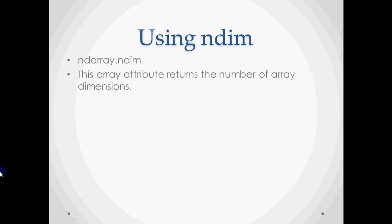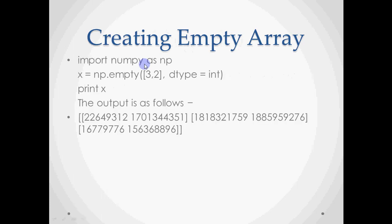Ndim is another attribute that tells you the number of dimensions of an array. Now there are some basic functions. We will look at three: one to create an empty array, one to create an array with all zeros, and one to create an array with all ones.